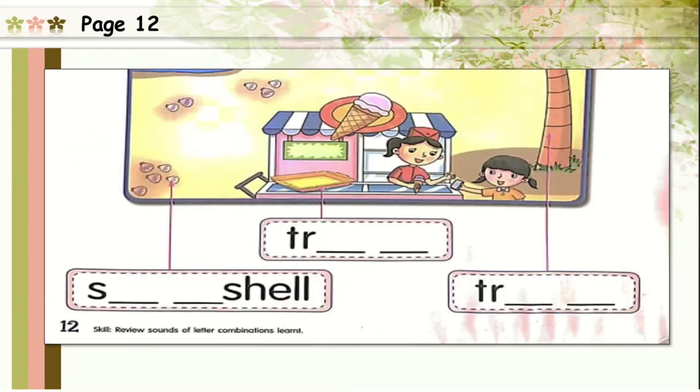Let's see the next one. What can you see there? Yes, it's a yellow color. Tray. T-R-A-Y. Very good, students.